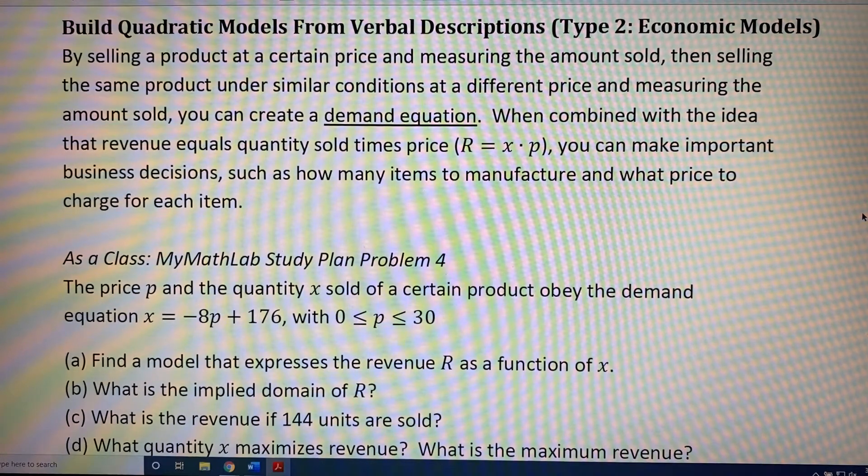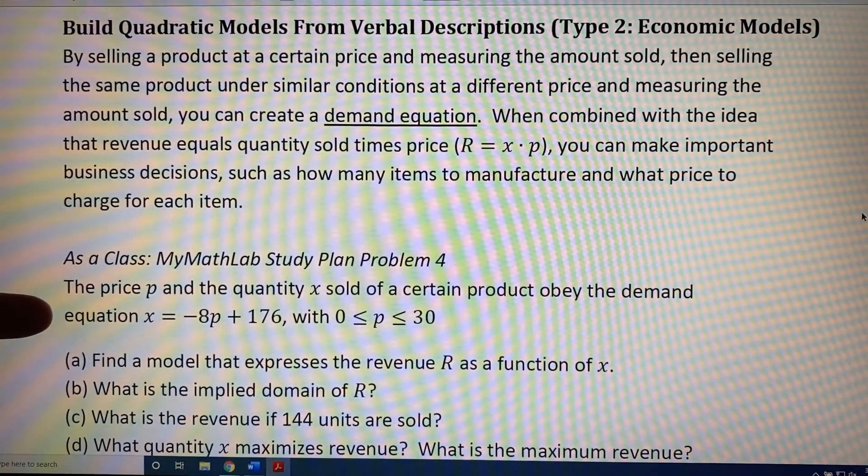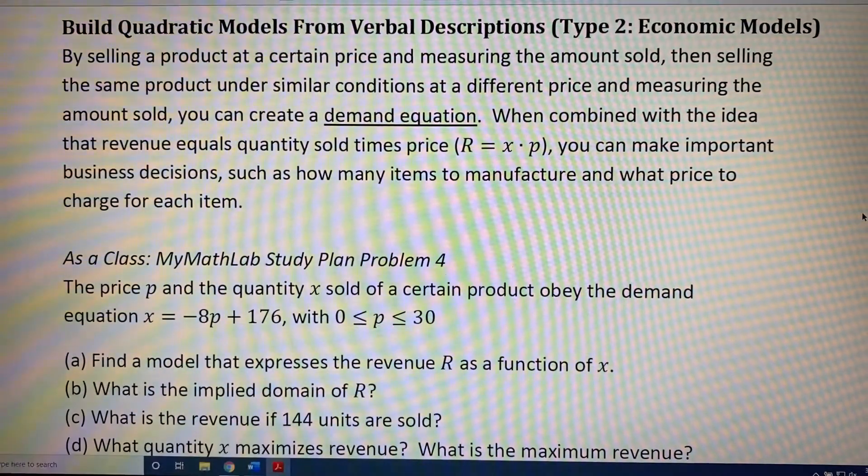In another video, we will solve the following problem. The price p and the quantity x sold of a certain product obey the demand equation x equals negative 8p plus 176, where the price p must be somewhere between 0 and $30.